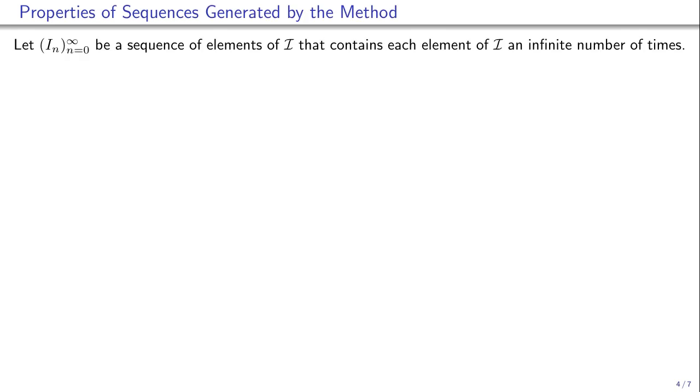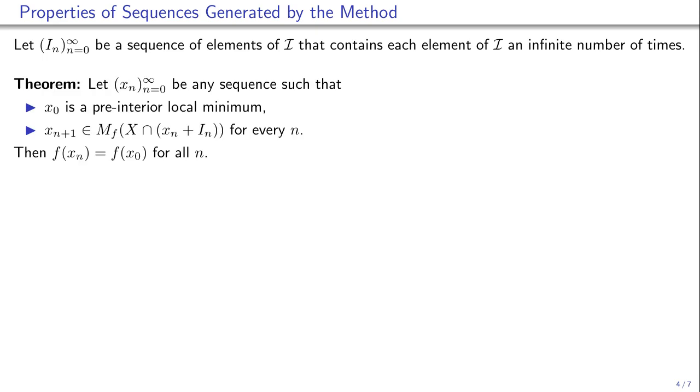The relative interior rule is not worse than any other rule to choose block minimizers. Precisely, if we are in a pre-interior local minimum, then any number of future updates, whether or not satisfying the relative interior rule, cannot improve the objective.